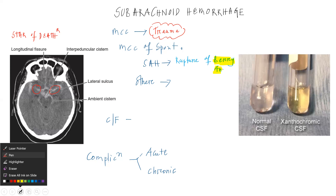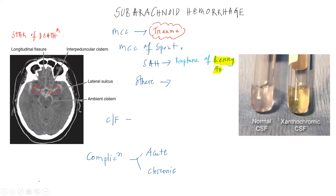Another cause of subarachnoid hemorrhage is rupture of an arteriovenous malformation. This we will discuss in the next video.